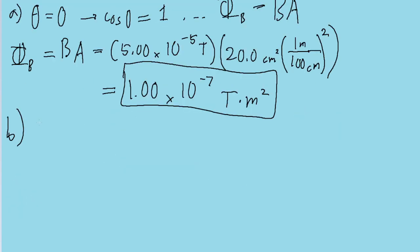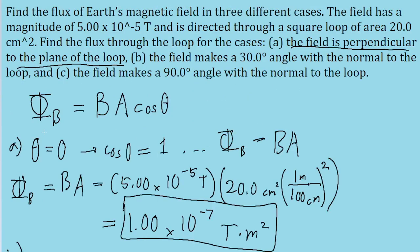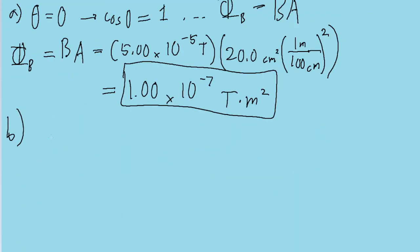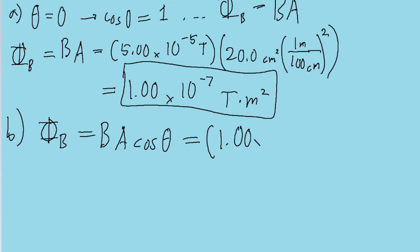Parts B and C are basically the same, except we're given non-zero values for theta. Part B asks about where the field makes a 30 degree angle with the normal to the loop. So we're going to use the same formula: Phi sub B equals B·A·cos(theta). We can save ourselves a little work by recycling our answer to Part A — we've already established that B times A equals 1.00 times 10 to the negative 7 tesla meters squared. So all we're doing is taking that answer and multiplying it by the cosine of our new angle, 30 degrees.